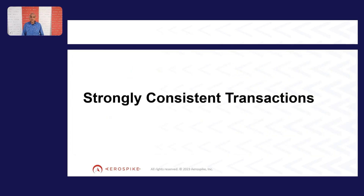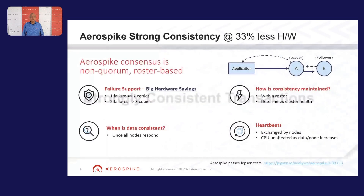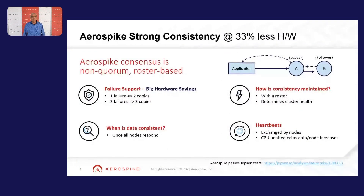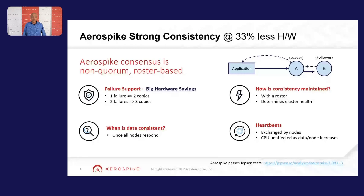First, let us talk about our strongly consistent transactions. Aerospike has implemented a fairly unique strong consistency algorithm with certain characteristics. These characteristics are used to not only optimize transactions for lower latency, but also to provide higher availability. One of the interesting things about Aerospike's strong consistency mechanism is that we use a non-quorum-based system — what we call roster-based — which means the state of the nodes in the cluster is shared among all the nodes in the cluster.